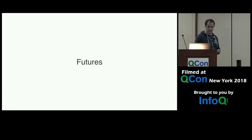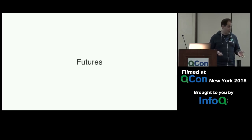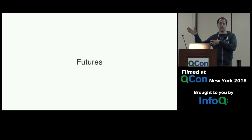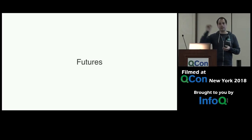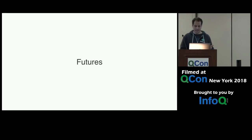The way Tokio manages asynchronicity and the programming model is based on futures. Futures aren't a new idea — every language has them. A future is a value that represents a computation. You have a computation going off in the background, and the future is a value you get immediately representing the completion of that computation and the end result. If that doesn't make sense, futures are basically monads. Hopefully that clears it up.